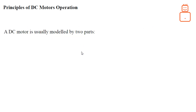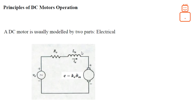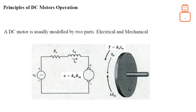DC motors are modeled by two parts: electrical and mechanical. On the electrical side, we have the supply voltage, the armature resistance, the armature inductance, and the back-EMF caused by the angular velocity of the motor shaft. The mechanical part is modeled as a rotating disk with inertia, viscous damping from the bearings, and the torque applied by the armature, which is related to the armature current.